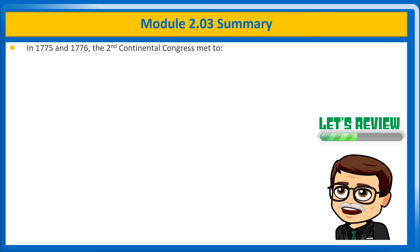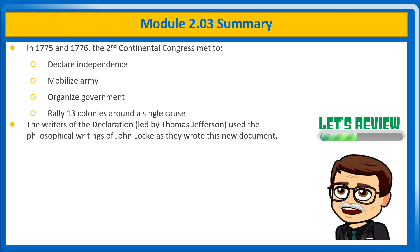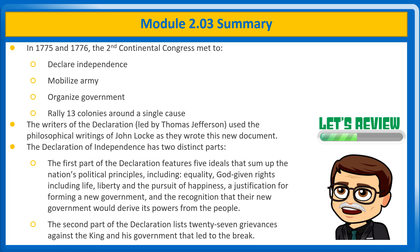So let's review. In 1775 and 1776, the Second Continental Congress met to declare independence, mobilize an army, organize government, and rally the 13 colonies around a single cause. The writers of the Declaration, led by Thomas Jefferson, used the philosophical writings of John Locke and others. The Declaration has two distinct parts: the first features five ideals including equality, God-given rights of life, liberty, and the pursuit of happiness, justification for forming a new government, and recognition that government derives its powers from the people. The second part lists 27 grievances against the king that led to the break.